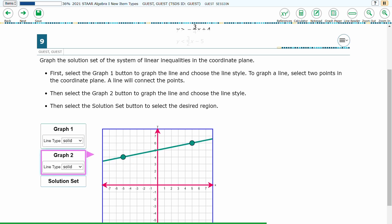Once graph 2 is selected, it will be outlined in purple. The point selected and the line that is drawn for graph 2 will be purple.